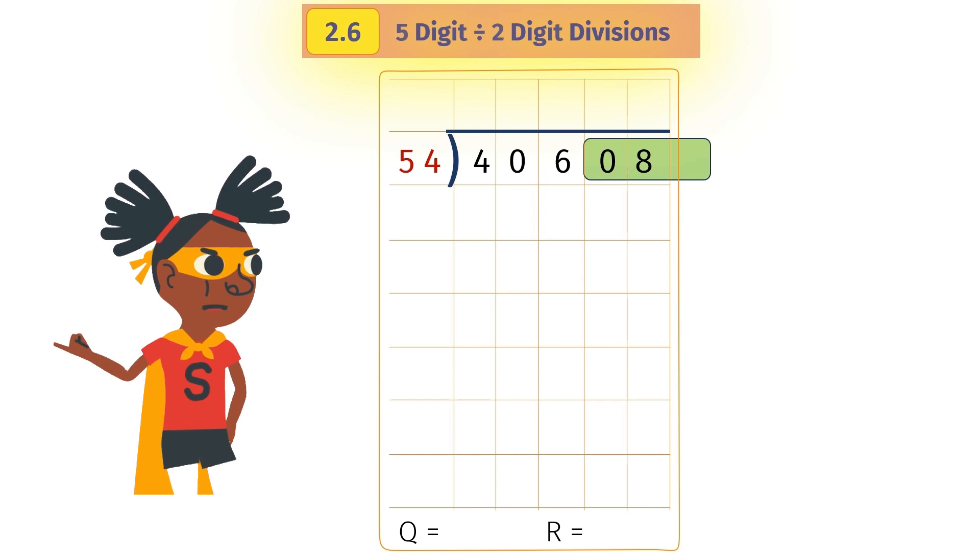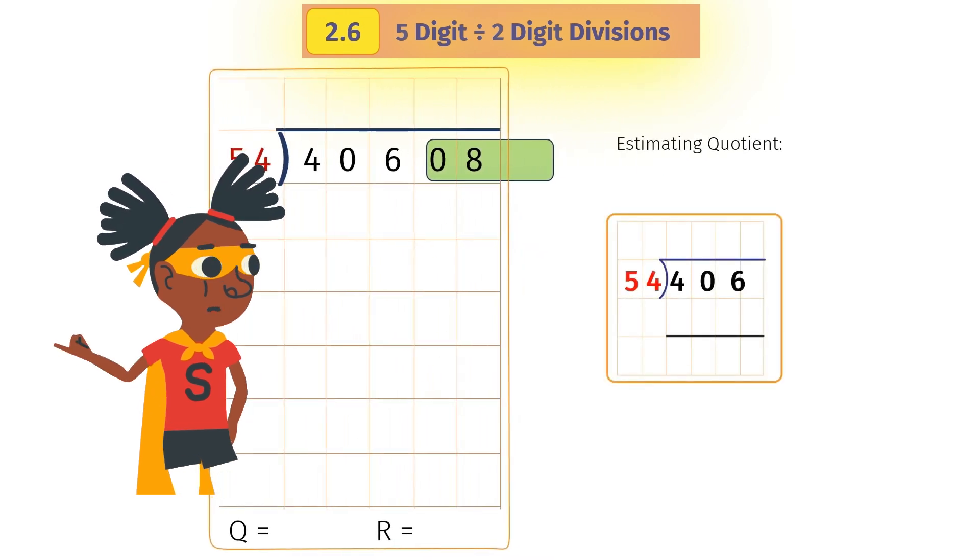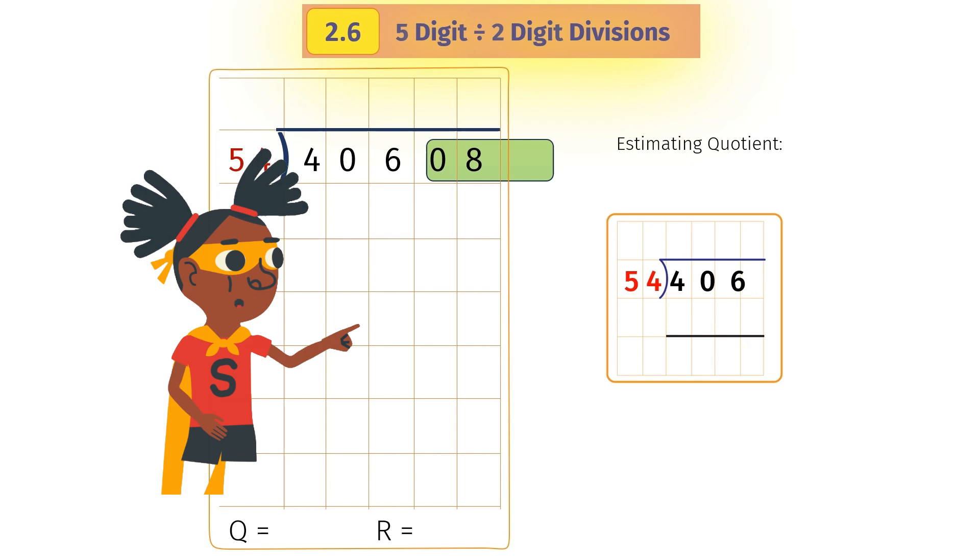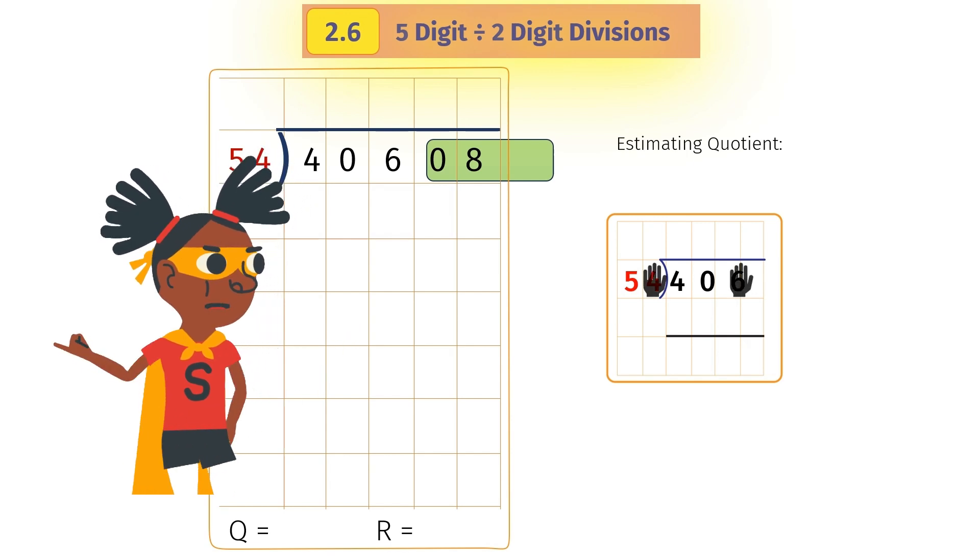We know by now how to divide a three-digit number by a two-digit number. We hide the last digit of the divisor and the dividend to get an estimate. Here we get the estimate of 8.